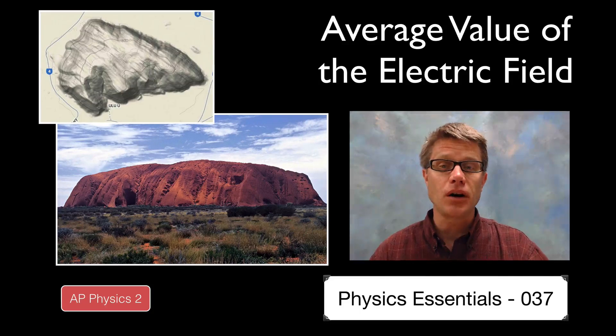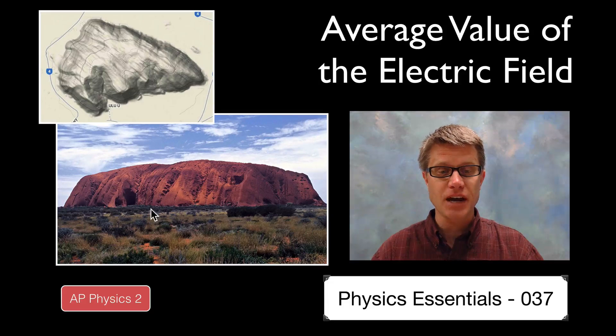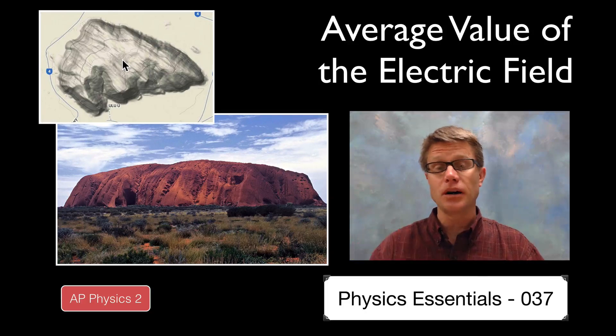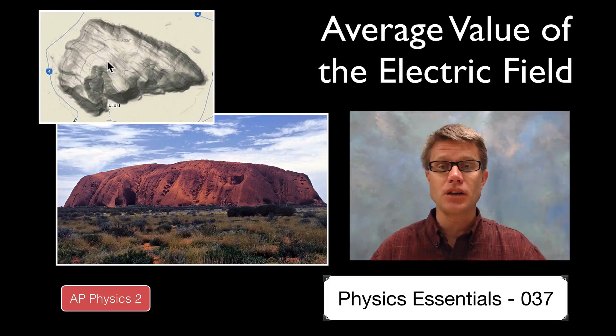One of the places I've always wanted to go to is Ayers Rock in Australia. This is a picture of it from the side, and this is what it looks like from above. This is going to show the contour lines on the side, in other words lines of equal elevation.